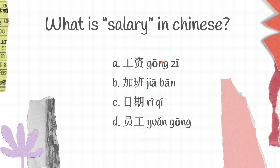Gung zi is salary, jiapan is work overtime, re qi is date, yuang gung is staff. And a is the right answer for this question, gung zi.